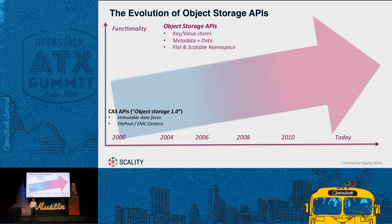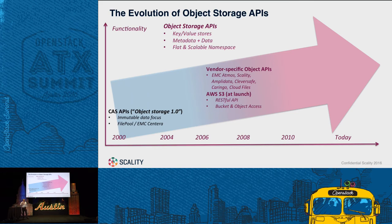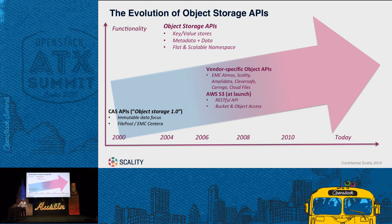Looking back, this all started about 15 years ago — object storage 1.0 — which was the world of content-addressed storage, or CAS. This came about with products like EMC Centera, purpose-built for storing immutable data for a long period of time. We'd store an object, associate a CAS signature with it, but never modify it — a vendor-specific or proprietary approach. That evolved into object storage 2.0 with more vendor-specific APIs from big and small vendors. Notably, this was also when Amazon S3 launched, around 2006–2007. It was a very basic API — buckets and objects, simple put/get/delete verbs — but functional, and it started everybody thinking about using object storage at mass.